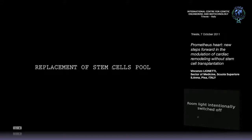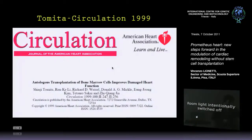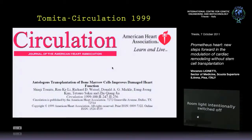The first person to publish on stem cells in the heart was Shini Tomita, published in Circulation in 1999. Nobody cared. This is the first paper. He induced cryo-injury on the epicardium, like Robledo, the same experiments. Then he injected autologous bone marrow cells in the border zone area and saw results in rats — which have an accelerated metabolism and are rich in growth factors. But it is the first stone: rats, dogs, pigs, human.